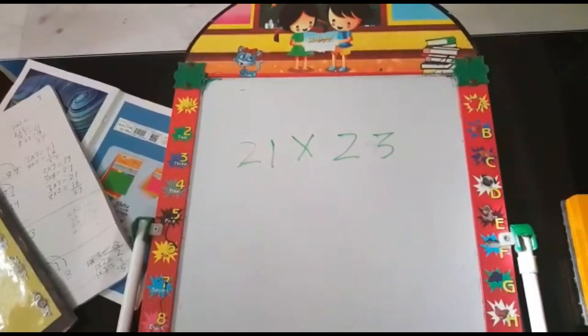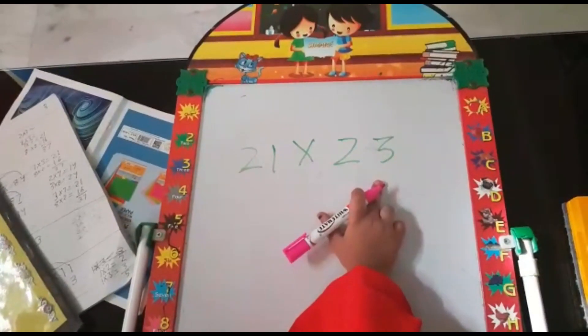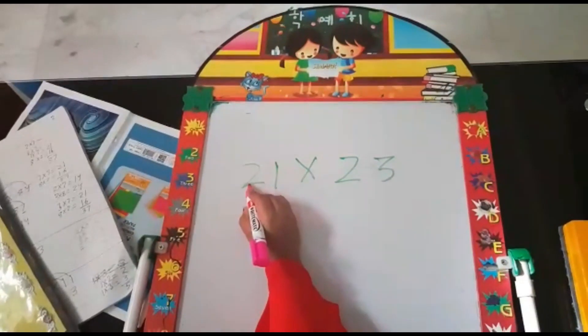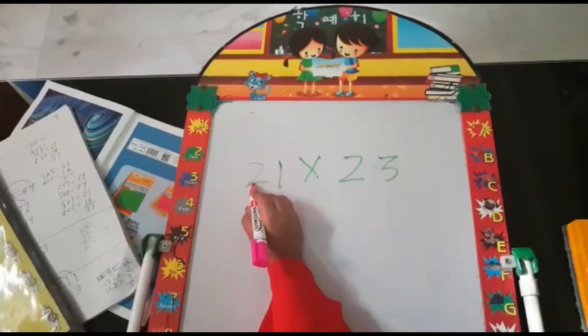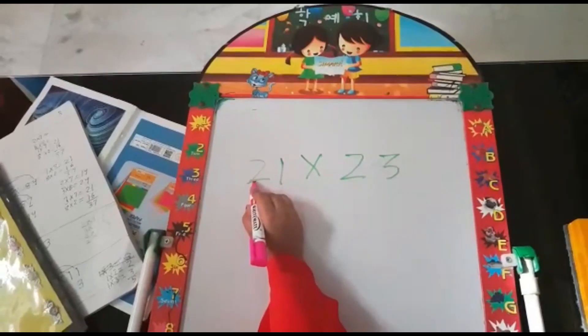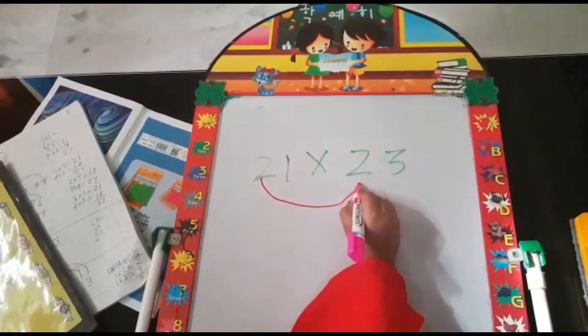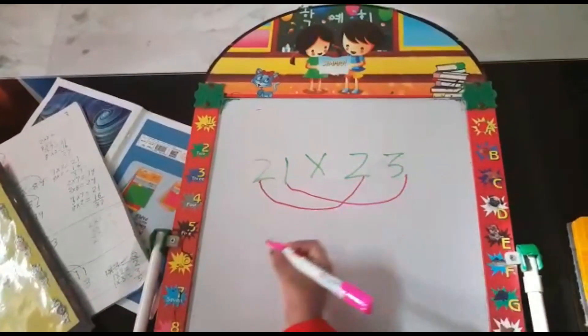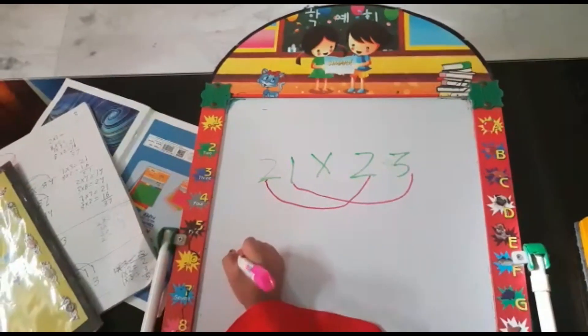Our next example is 21 and 23. Let's be quicker this time. We will start with step number 1 of criss cross multiplication: 1s with 1s, 10s with 10s.